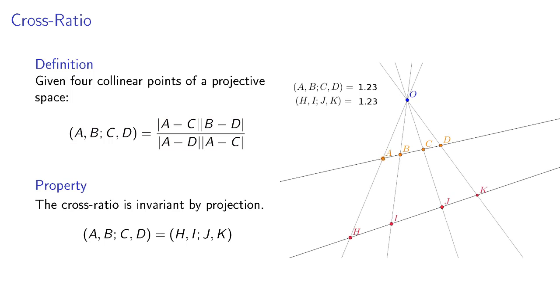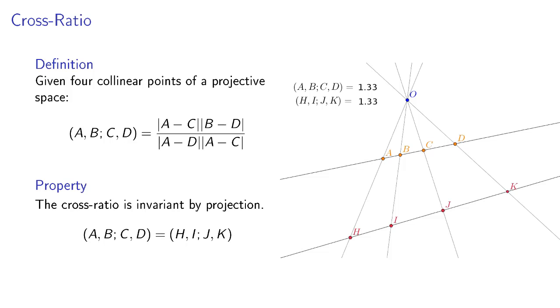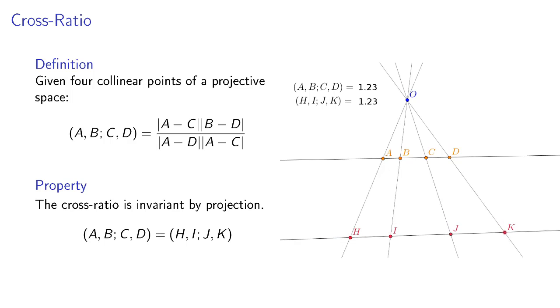A fundamental property of the cross-ratio that we'll use throughout the video is its projective invariance. Given two sets of four points related by a projective transformation, the two sets have the same cross-ratio. As we can see on the animation, moving the points along the lines doesn't change the value of the cross-ratio.